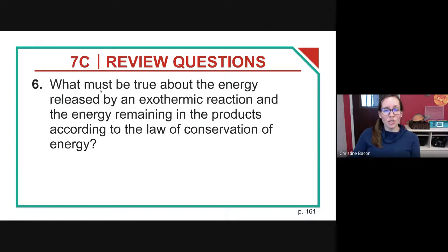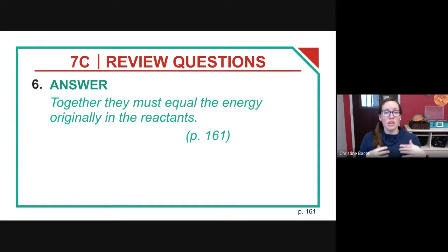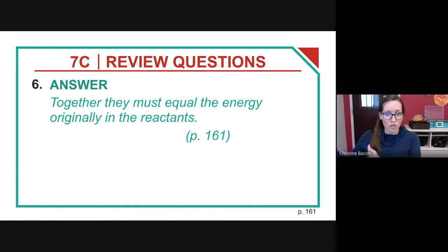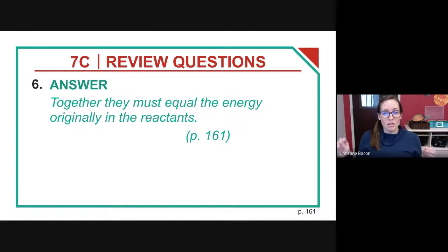What must be true about the energy released by an exothermic reaction and the energy remaining in the products, according to the law of conservation of energy? Together, the energy from the reactants plus the energy required to start the reaction must equal the energy released and the energy in the products. Energy can't be created or destroyed — it just changes forms. Total energy input equals total energy output.